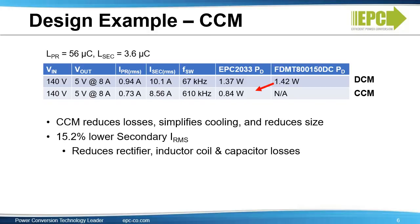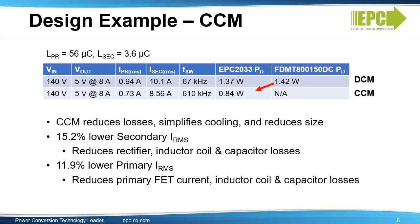There is 15% lower secondary RMS current, which reduces rectifier losses by 0.6 watts compared to the CCM MOSFET. It also reduces inductor coil losses by the square of the current, and reduces capacitor ripple current losses. Additionally, there is about 12% lower primary RMS current, which reduces primary FET current, trading on-state losses for switching losses. It also reduces inductor coil losses by I-squared and capacitor ripple current losses. Our newest 170-volt FET, the EPC2059, saves an additional 60 square millimeters over the previous GaN solution.